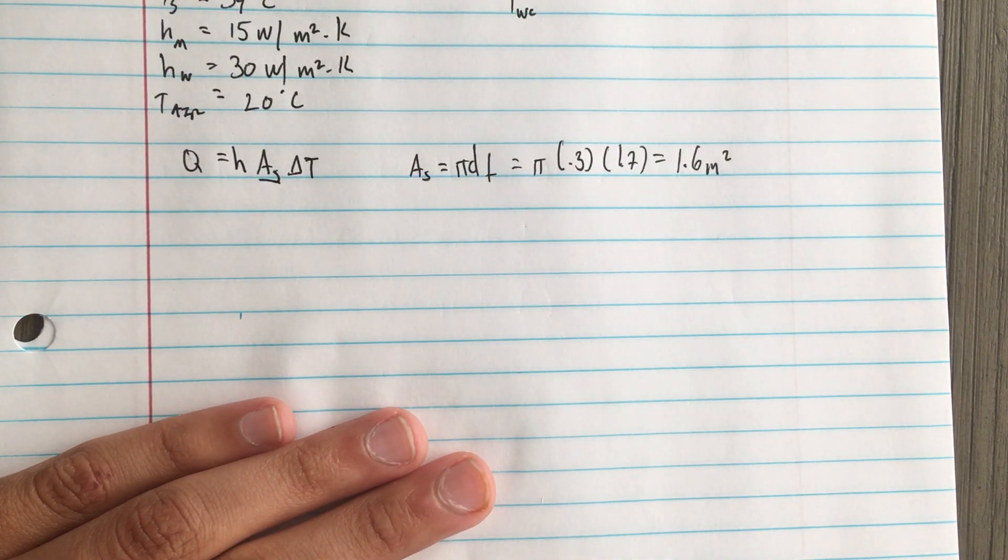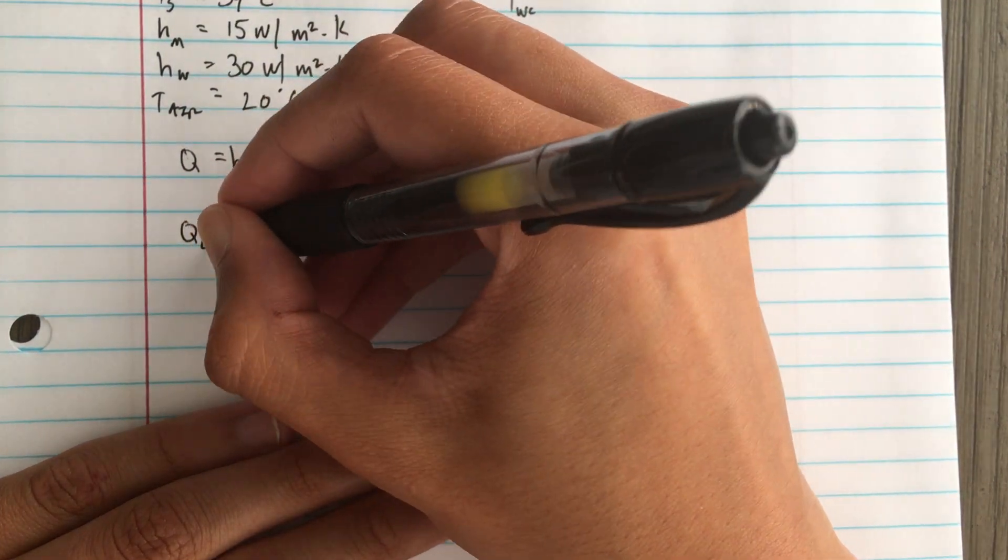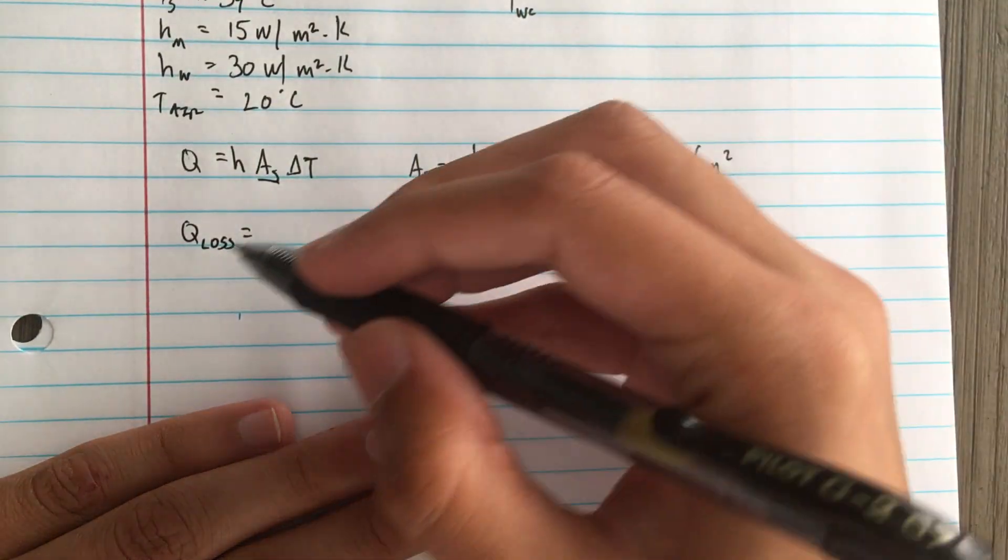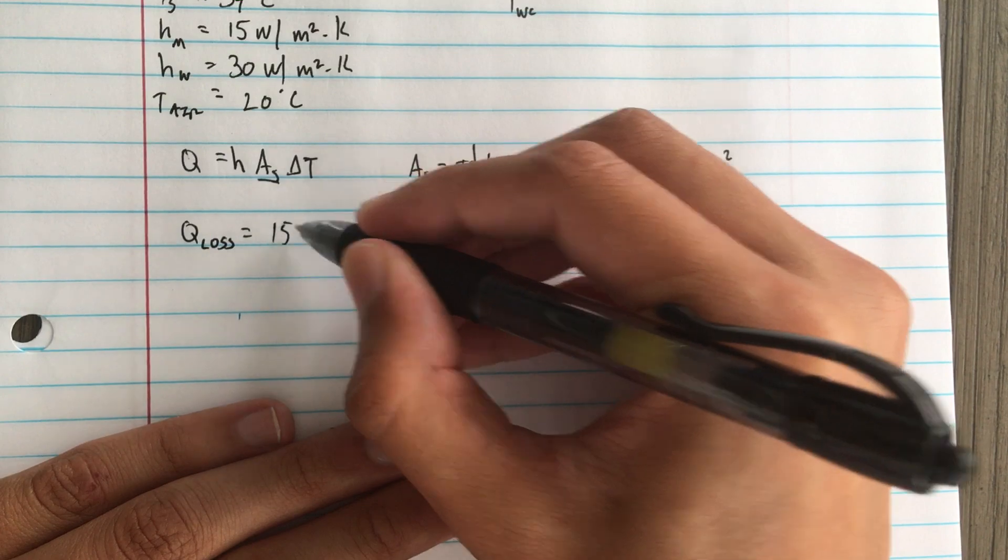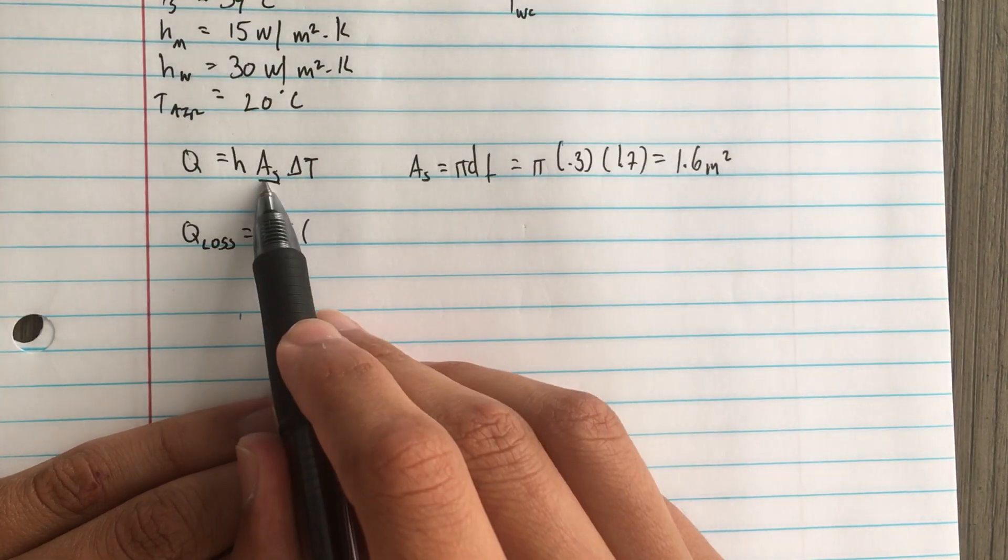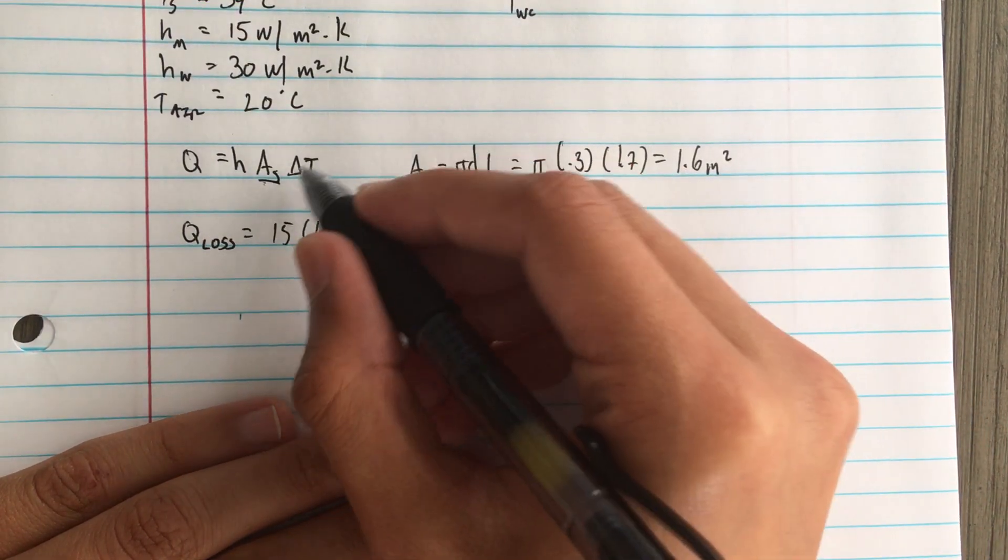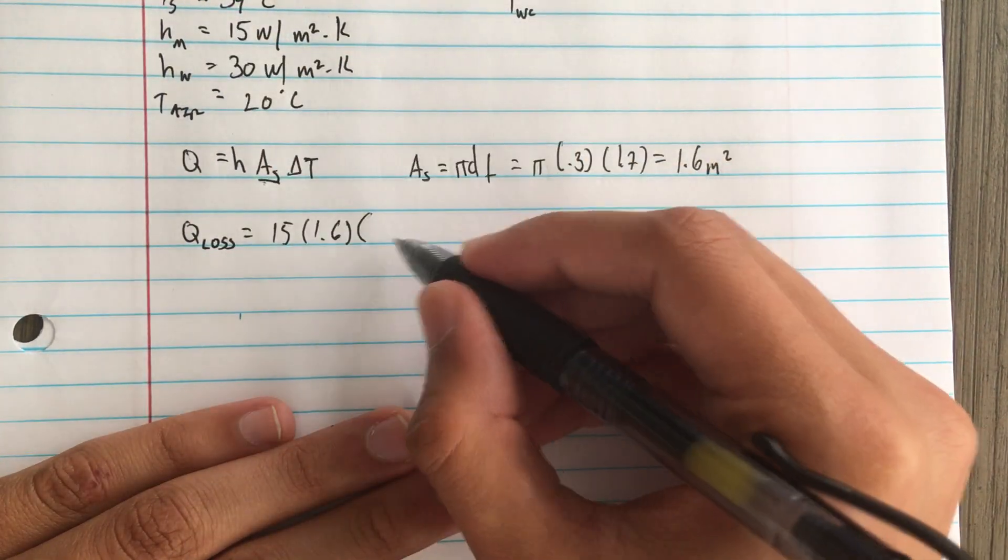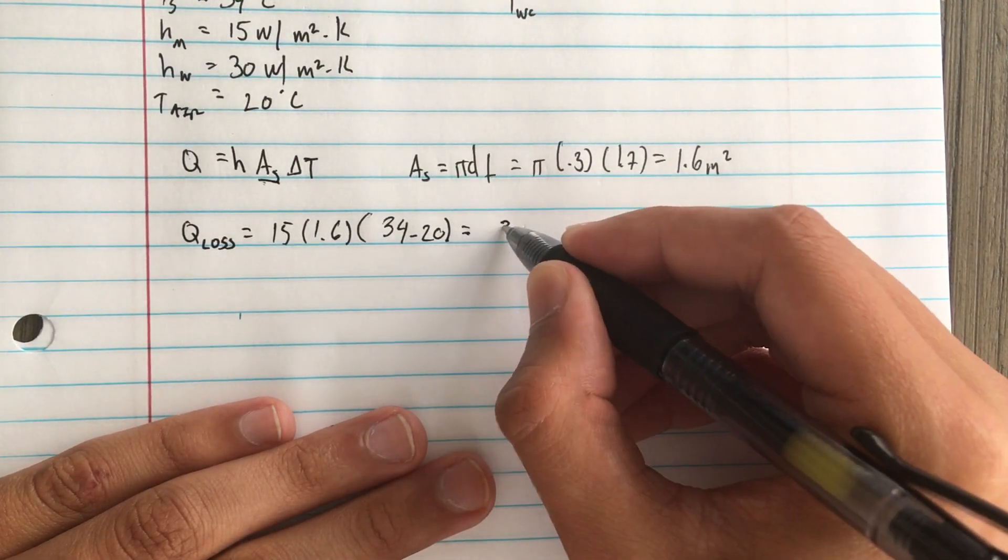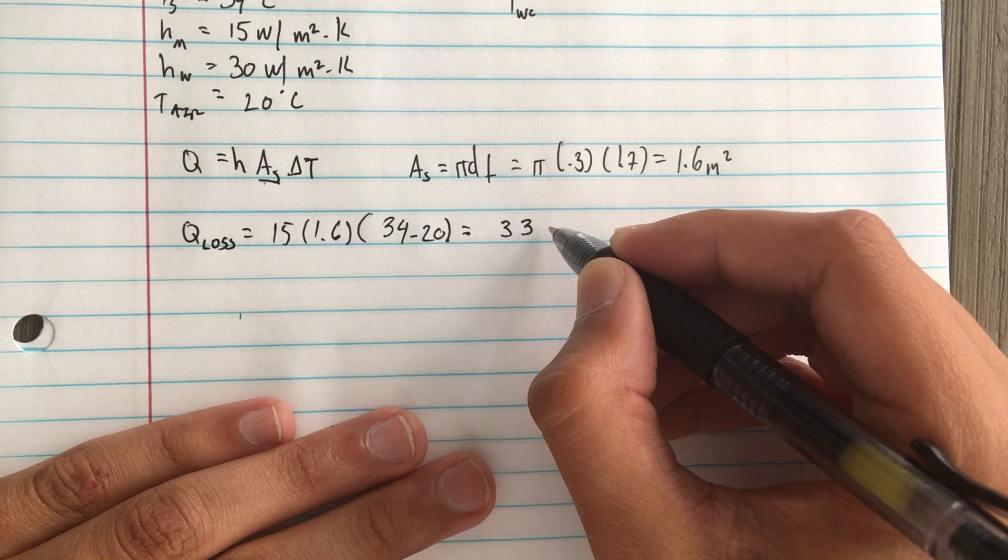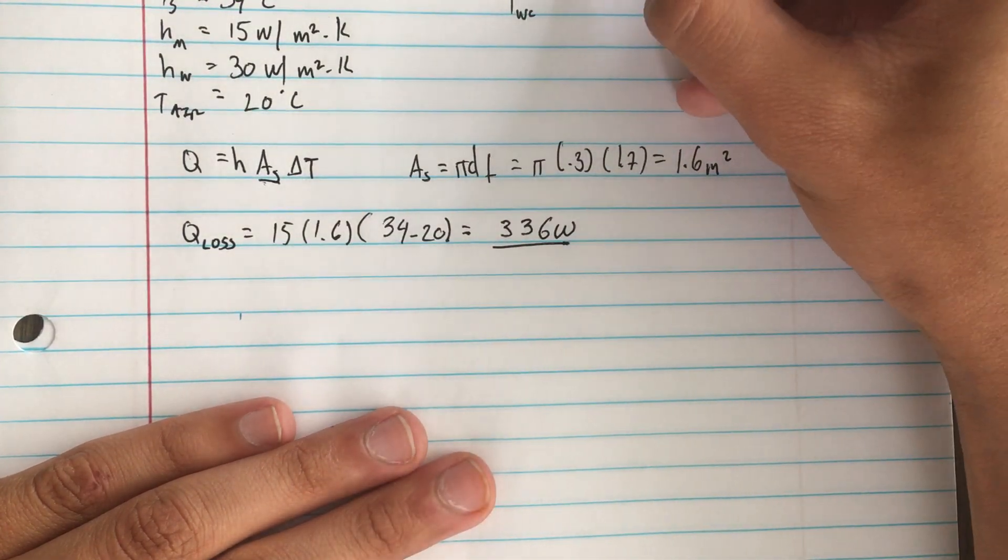So next we find the heat loss of the person. The h we have here is 15, the surface area is 1.6 which we just calculated, and then delta T is 34 minus 20. That gives us 336 watts, so that's the answer for this one.